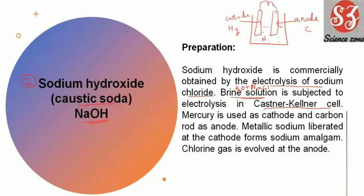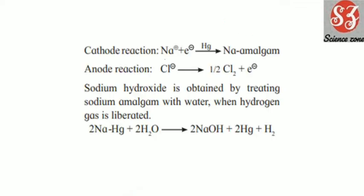In the brine solution, sodium ions migrate to the cathode (mercury) and chloride ions go to the anode. Sodium gets deposited on the mercury cathode, forming sodium amalgam. The chloride ions are discharged at the carbon anode. The sodium amalgam obtained after electrolysis is further treated with water to give sodium hydroxide plus H₂ gas.